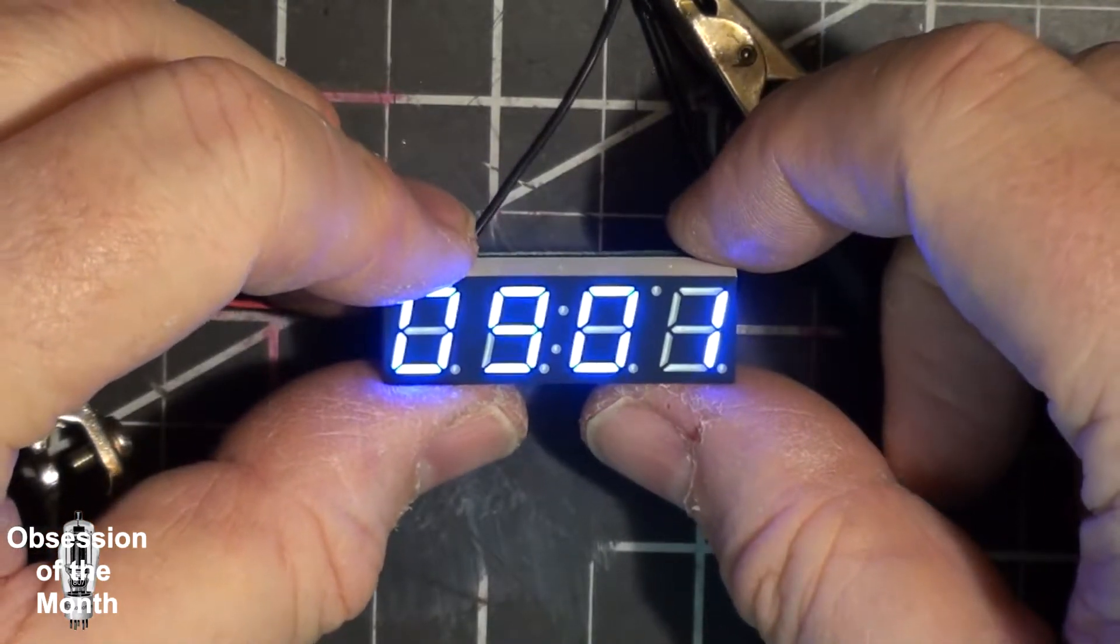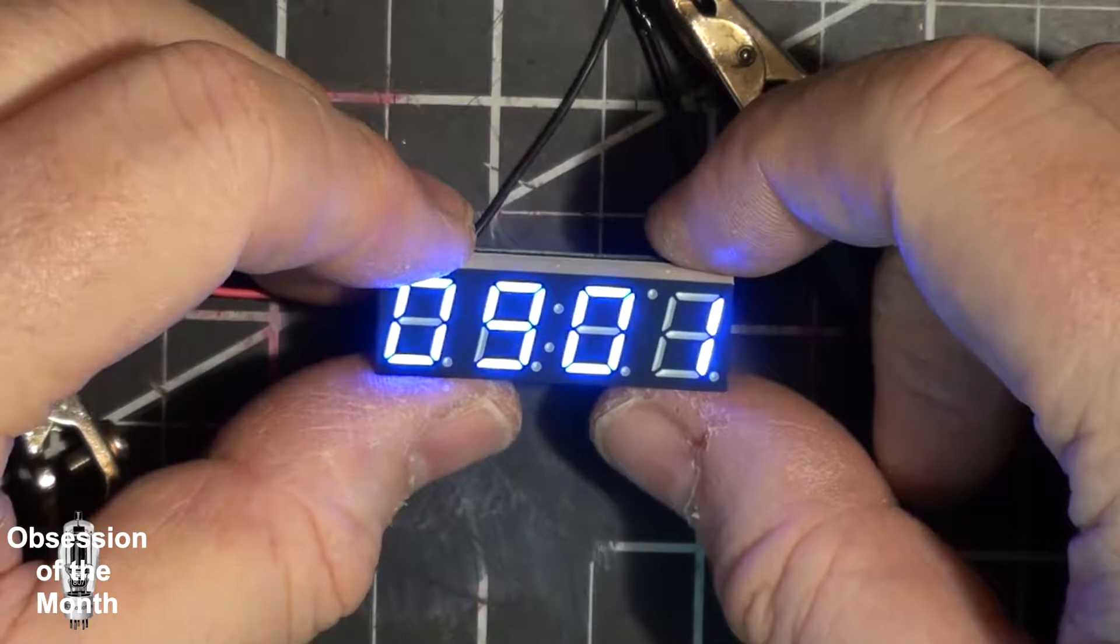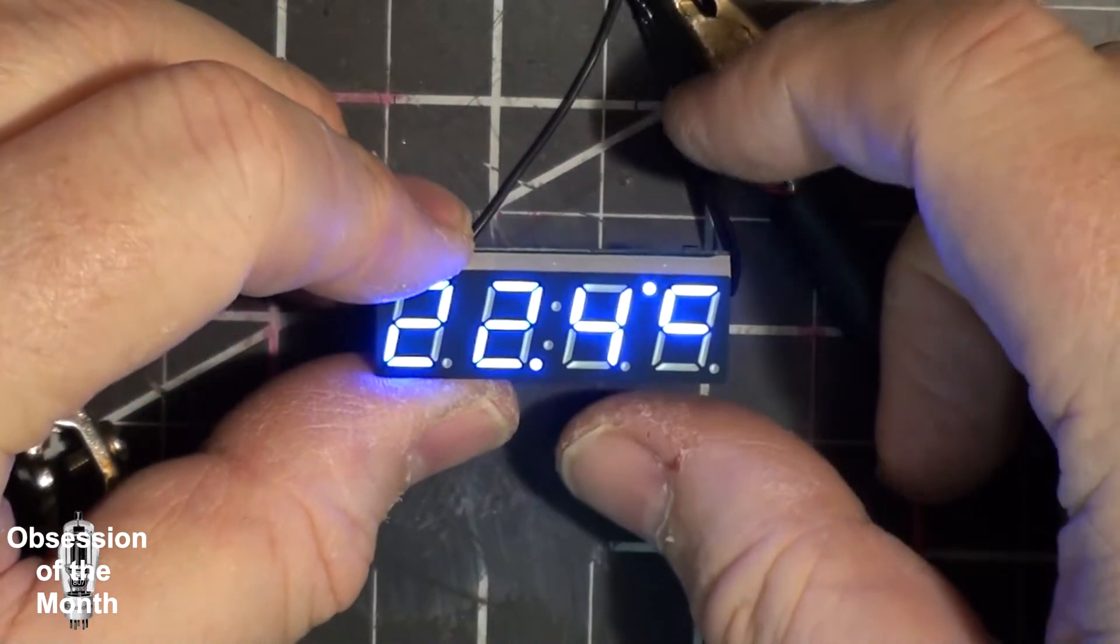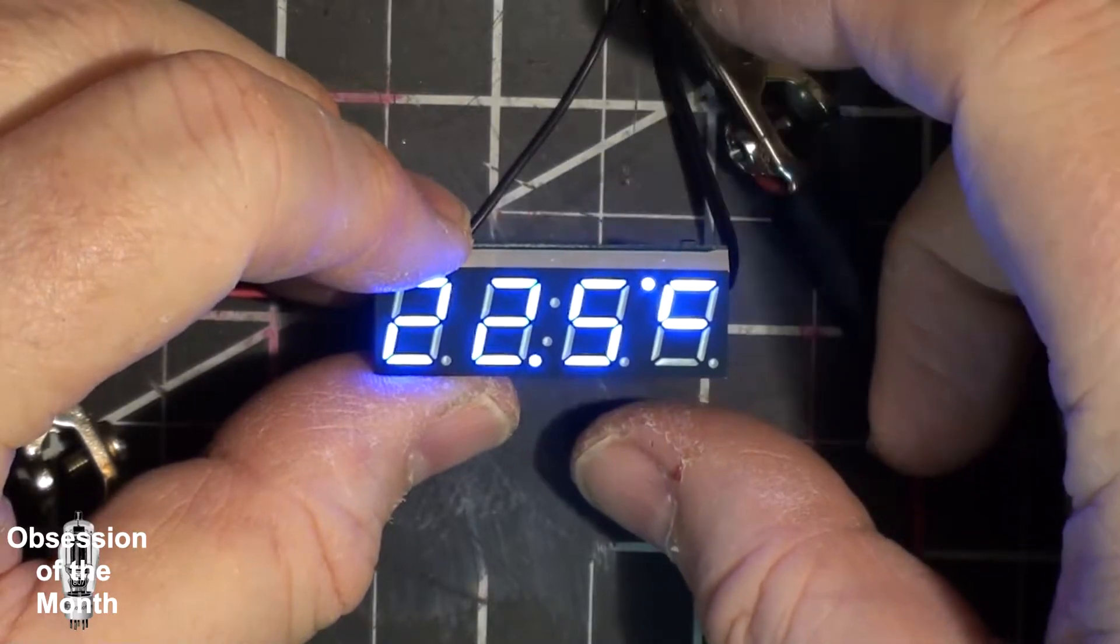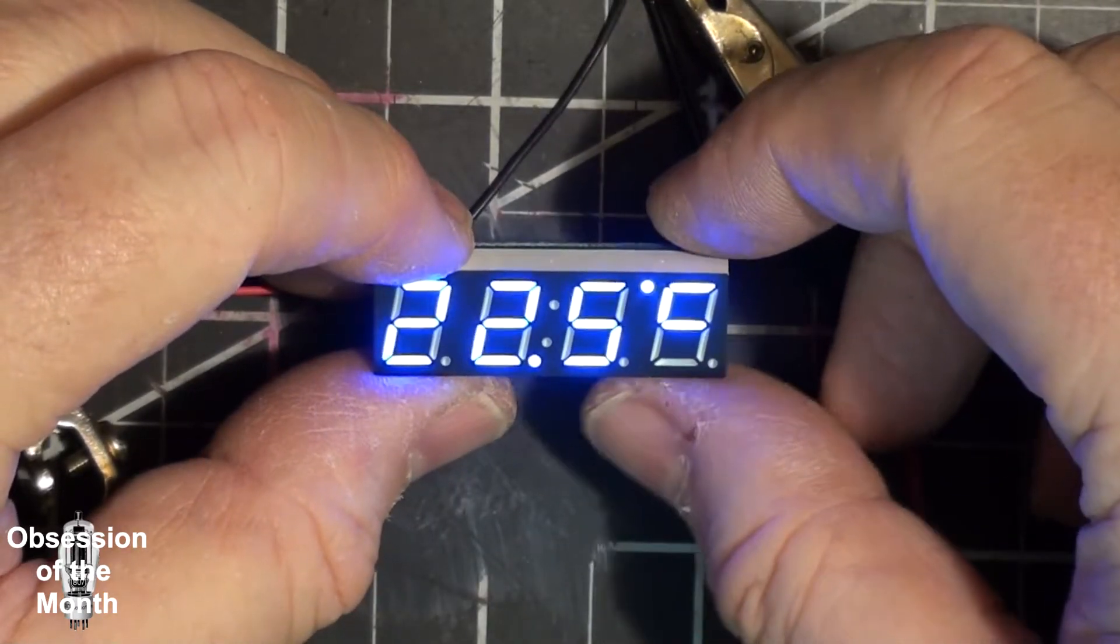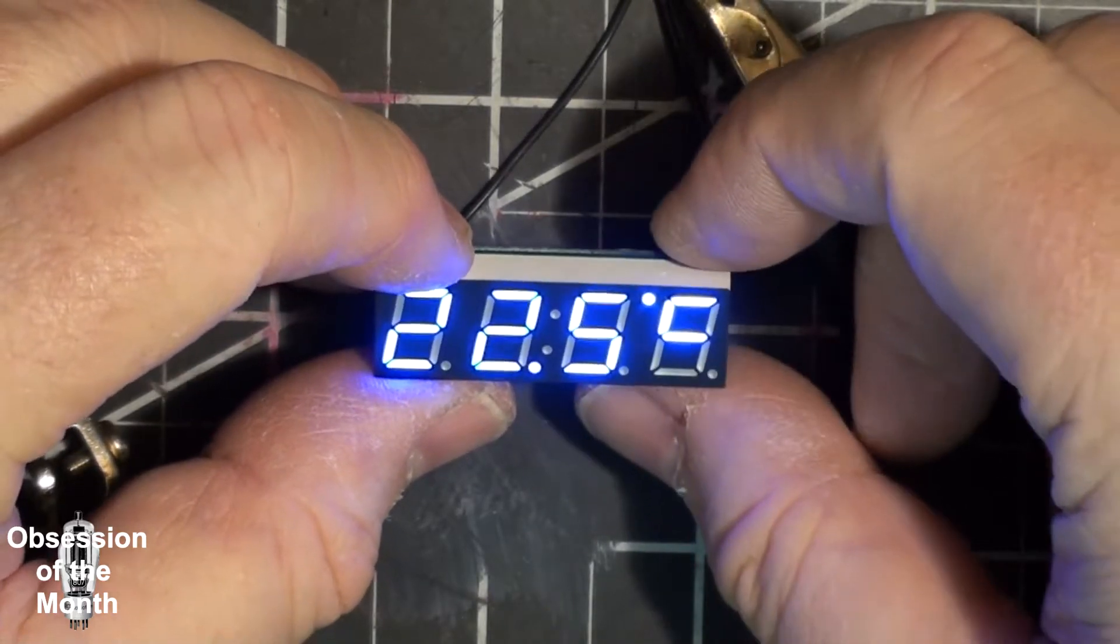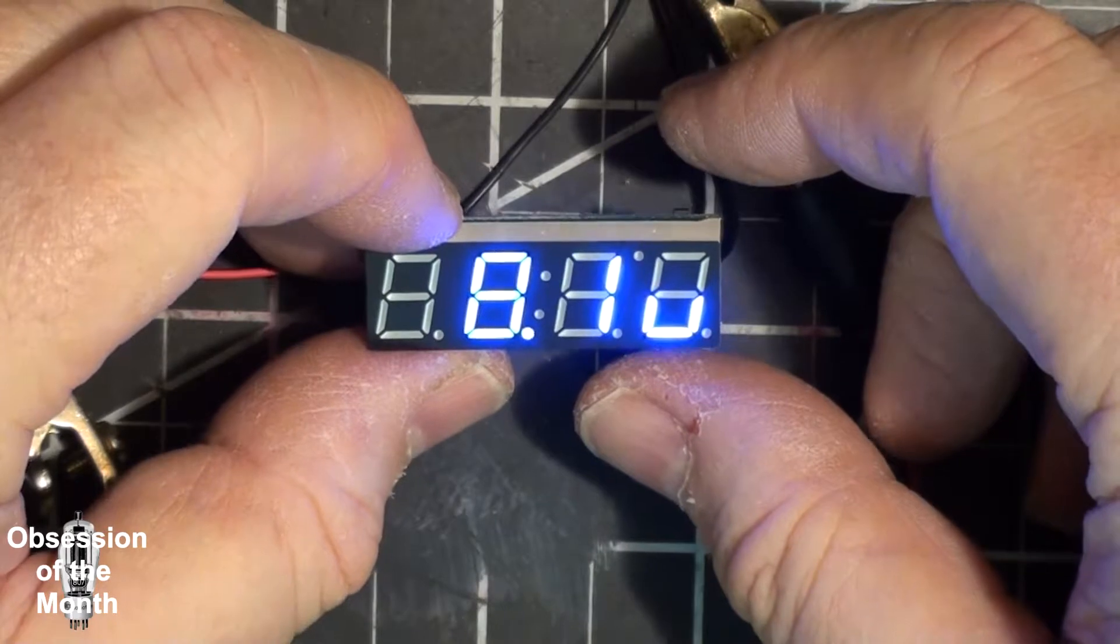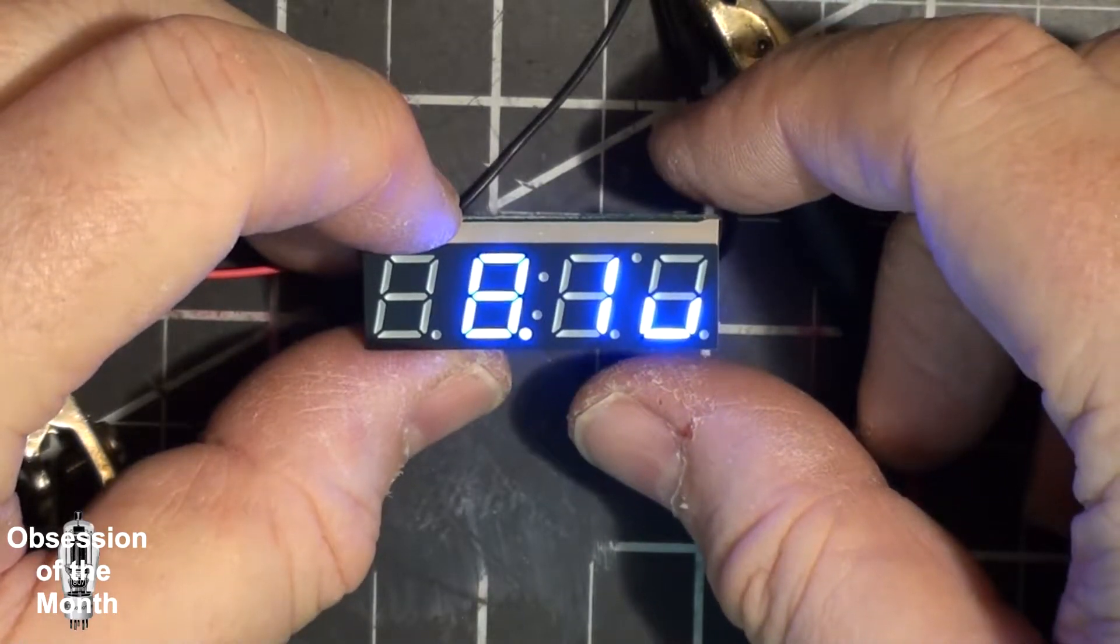If I press this one, it changes to the date. It will not show the year. And it shows the temperature here - I do not know if this is accurate. And the voltage that it's receiving: 8.1 volts.